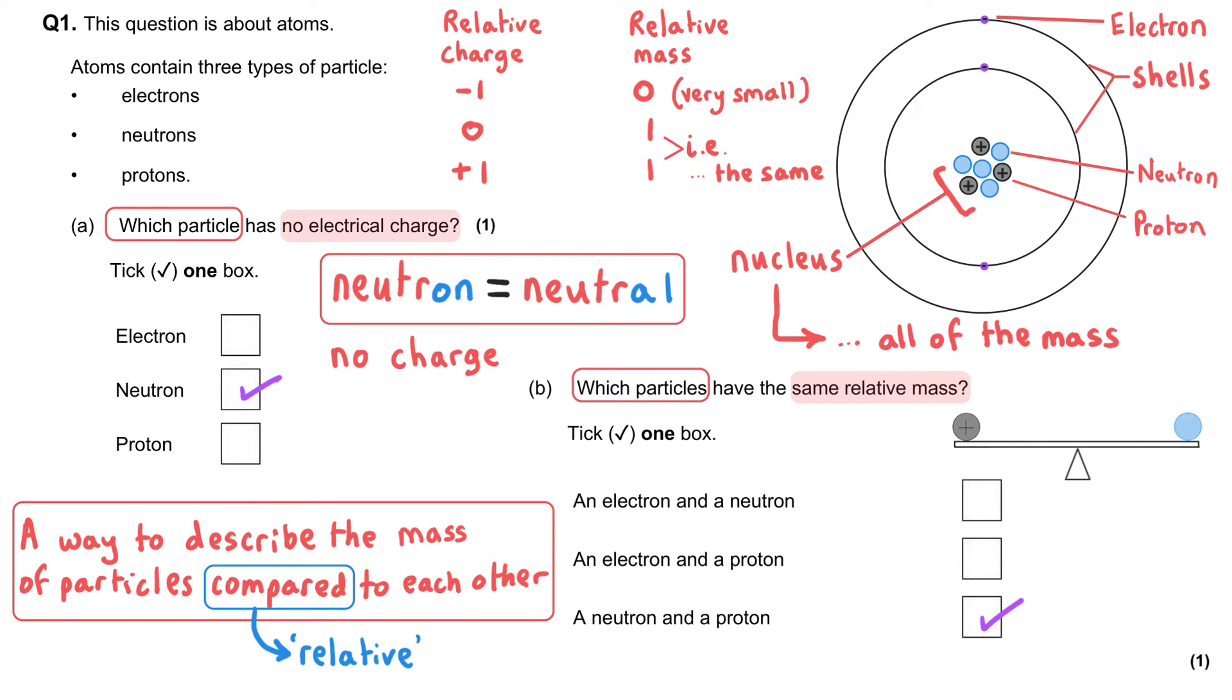Electrons, in contrast, have a relative mass of very, very close to zero. Some books might quote it as zero, other books might quote it as being very small. It is about 2,000 times smaller than neutrons and protons. And so since no element has 2,000 electrons, we can consider its mass to be zero.